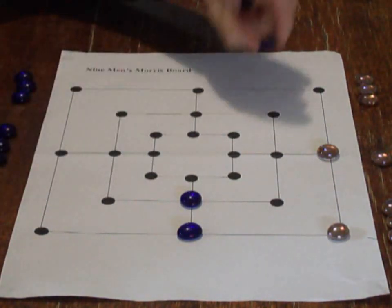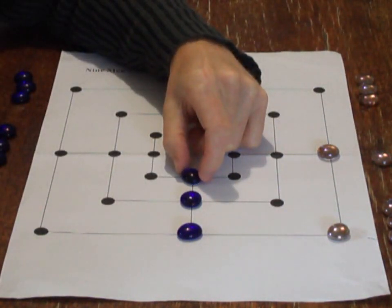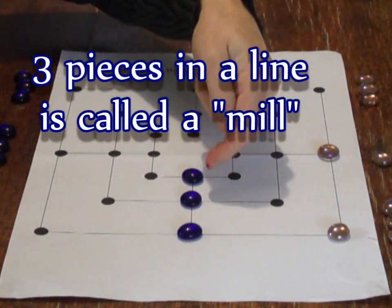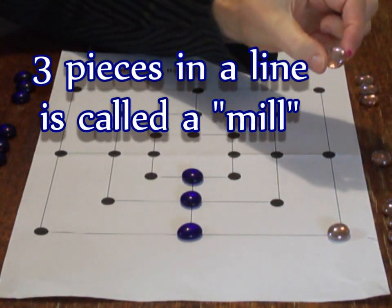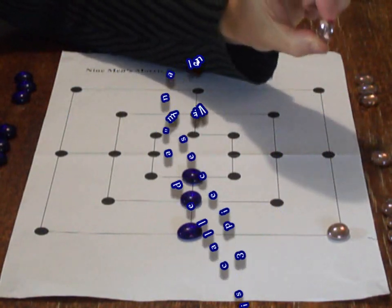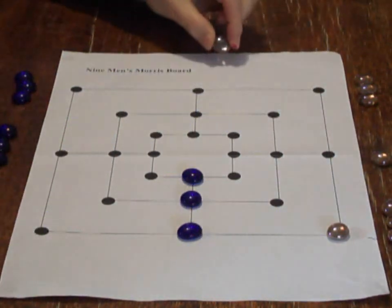blue will play here, create three pieces in a line, and immediately be able to take one of white's pieces off. And that piece is out of the game for the rest of the game. It's gone.